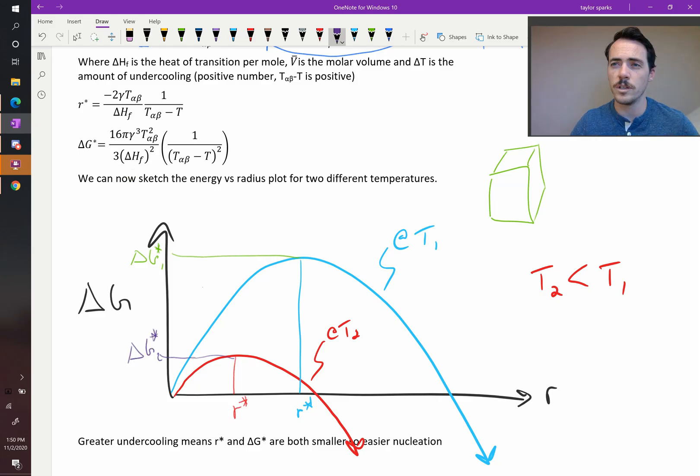So that's a key thing with homogeneous nucleation. When you cool it down further below its thermodynamic temperature where you expect it to take place, the further and further down you cool it, it lowers the barrier for this to take place. Not only does R star get smaller, but the activation energy also gets smaller, making it more and more likely that it will eventually take place.